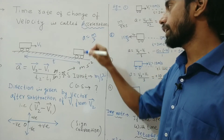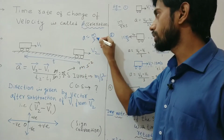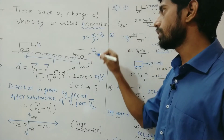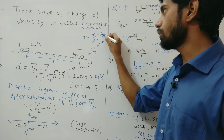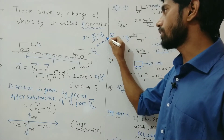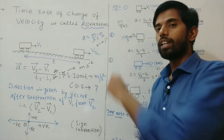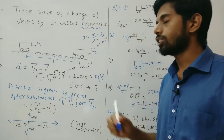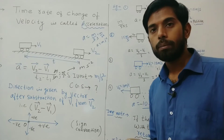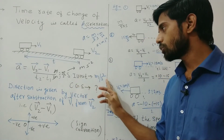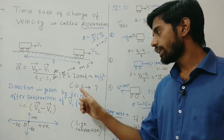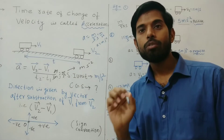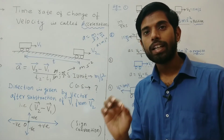Velocity is meter per second, and dividing by time gives meter per second square. You can also write it as meter·second to the power minus 2, because when the denominator has power plus 2, moving it to the numerator makes it minus 2. The SI unit is meter per second square. Now a question for you: what is the CGS unit of acceleration? Answer in the comments.